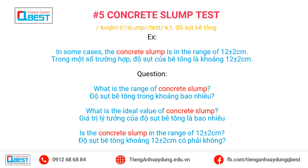Topic 5: Concrete slump test. Example: In some cases, the concrete slump is in the range of 12 plus or minus 2 centimeters. Question: What is the range of concrete slump? What is the ideal value of concrete slump? Is the concrete slump in the range of 12 plus or minus 2 centimeters?